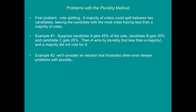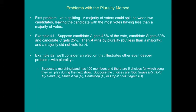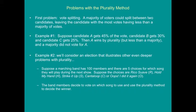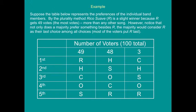Example 2 illustrates even deeper problems with plurality. Suppose a marching band has 100 members, and there are five choices for which song they'll play: Rico Suave (R), Hold My Hand (H), Strike It Up (S), Cantaloupe (C), and Oops I Did It Again (O). The band uses plurality to decide. In the preference table, 49 people pick R first, 48 pick H first, and 3 pick C first.